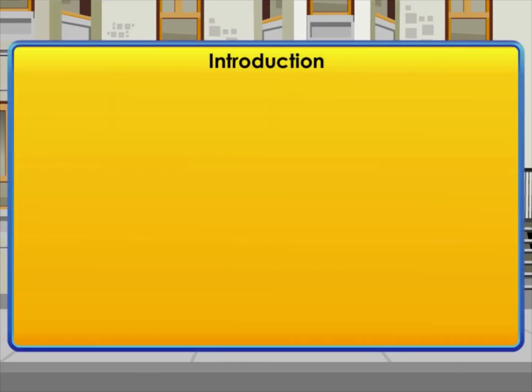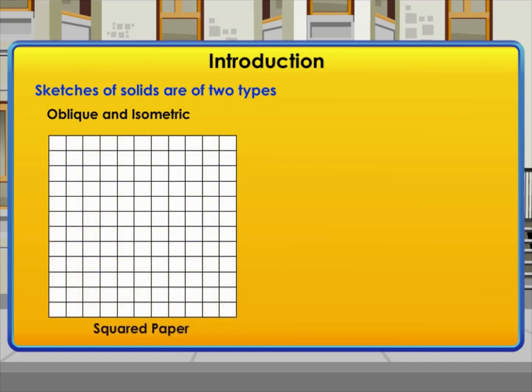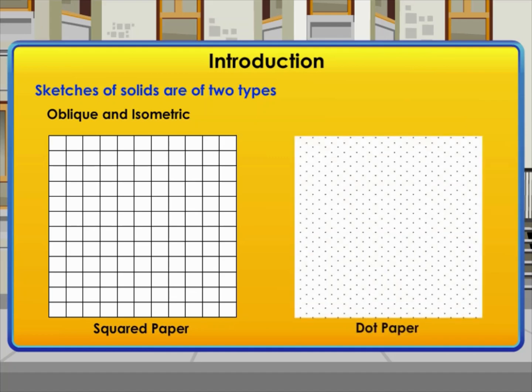Introduction: Solid shapes can be drawn on a flat surface, which is known as the two-dimensional representation of a three-dimensional solid. Sketches of solids are of two types: oblique and isometric. To draw these sketches, we need squared paper and dot paper. Using these, we can draw cubes and cuboids.